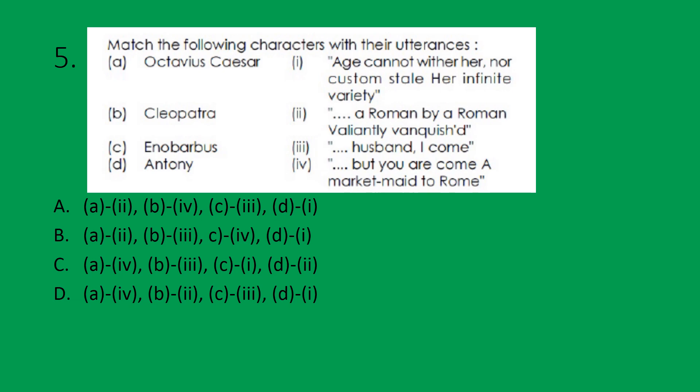This is the most difficult question: four characters from the same play, Antony and Cleopatra, and their lines are given. Look at the question very carefully — match the following characters with their utterances. It is not asked on whom the speech is done; it is about who speaks these lines. Look at the options: Octavius Caesar, Cleopatra, Enobarbus, and Antony. One line — 'age cannot wither her, nor custom stale her infinite variety' — definitely we know it is about Cleopatra, but Cleopatra cannot speak this. That is the point. It is a little bit complicated, so let me explain one by one.